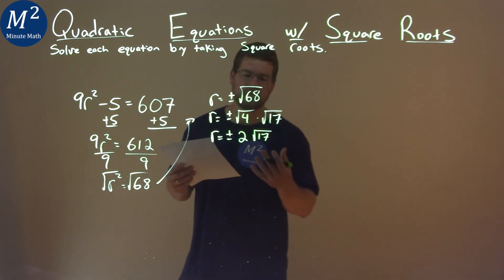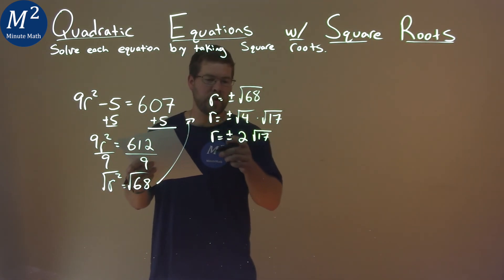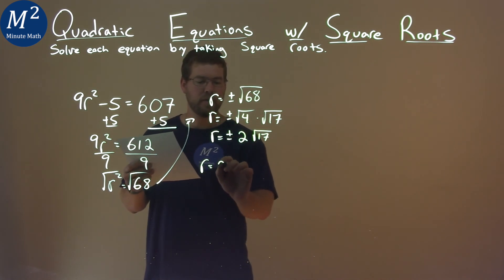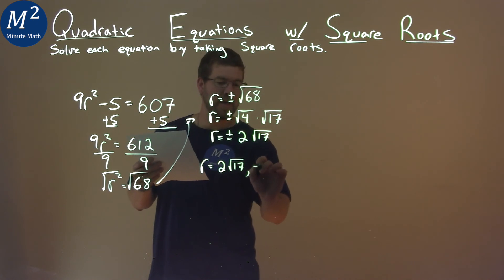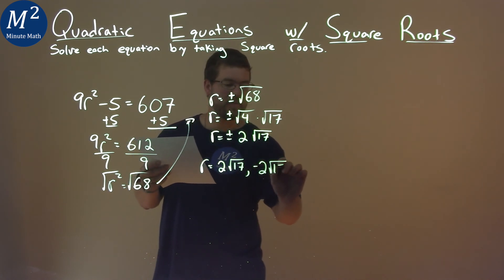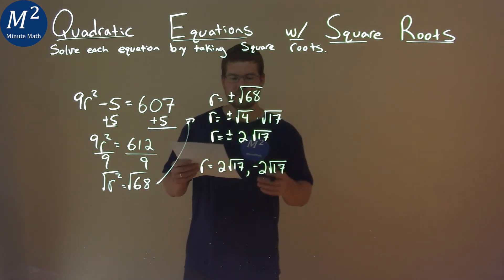So now it's in its simplest form, so we can write it out. We have a plus or minus, so we can see it as r equals positive 2 square root of 17, and r equals negative 2 square root of 17. And that is our final answer.